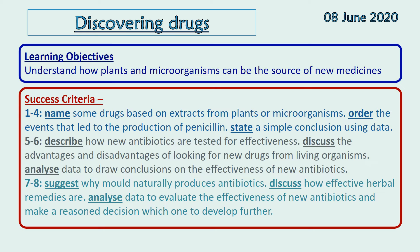So what do we need to know from this lesson? We need to be able to name some drugs based on extracts taken from plants and microorganisms, and also know the order of events that led to the production of penicillin. We need to describe how new antibiotics are tested and think about the advantages and disadvantages of looking for new drugs. For grades seven to eight, we need to suggest why mould naturally produces antibiotics and discuss how effective herbal remedies are.